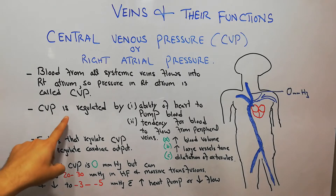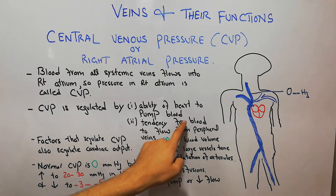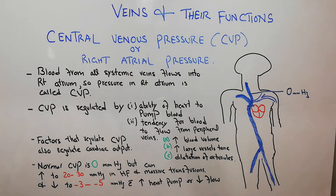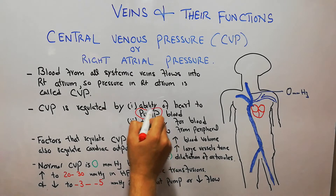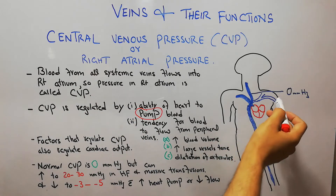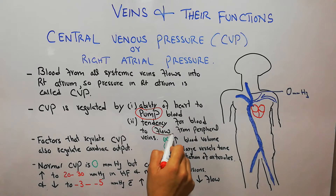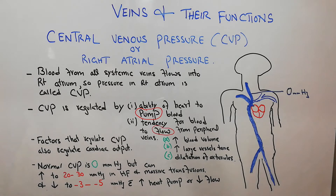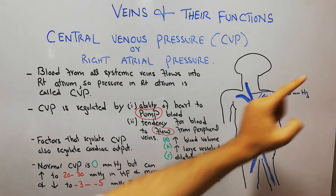The central venous pressure is regulated by two basic things: the ability of the heart to pump the blood, and the tendency for the blood to flow from the peripheral veins. The pumping of the heart and the flow of blood are the two main mechanisms which will determine the central venous pressure.